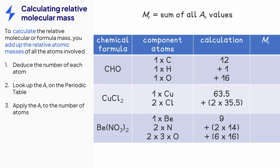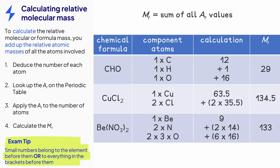Once you have the calculation you can work out the Mr. CHO is 29. CuCl2 is 134.5. Be(NO3)2 is 133. Take your time with compounds that contain small numbers and brackets.